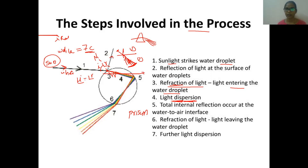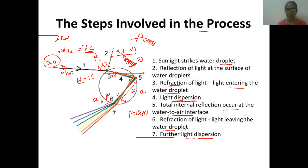Whatever light is not coming out — it is totally reflecting back. That is total internal reflection occurring at the water-to-air interface. At this interface, total internal reflection takes place. The last process is refraction of light leaving the water droplet. When it comes out from water to air — from denser medium to rarer medium — the speed increases and it spreads out. Further light dispersion occurs, and all seven processes result in the formation of the rainbow.